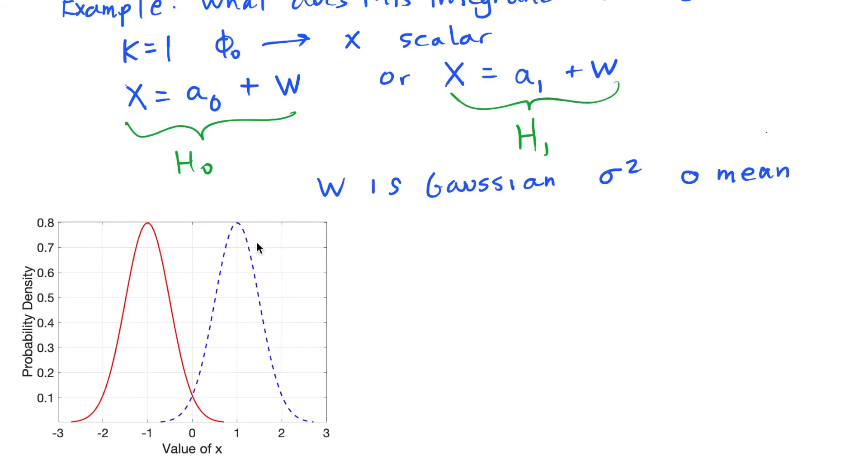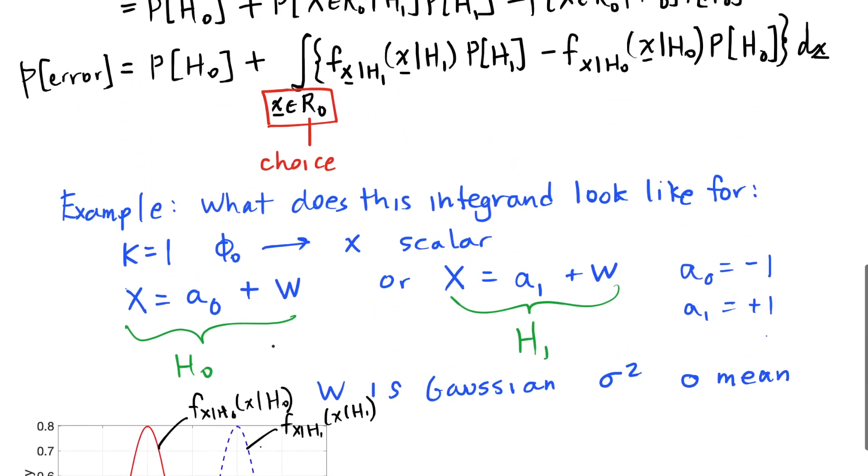So the first thing I'm going to show are the probability density functions. This would be F of X given H0, and this would be F of X given H1. This is for the example where I have a symbol 0, which would send a voltage of minus 1, and a symbol 1, which would send a voltage of plus 1. These are what the probability density functions would look like for this case.